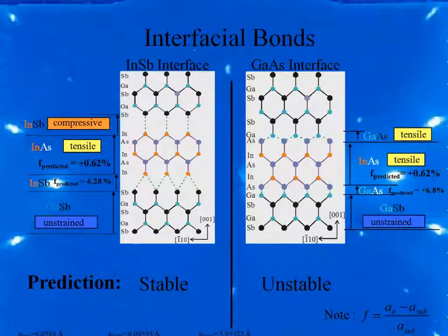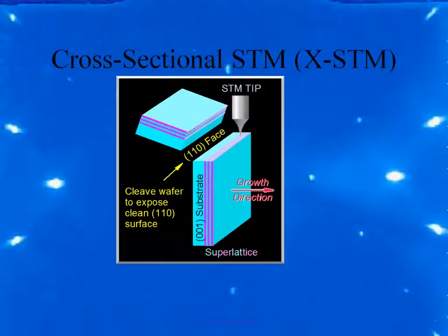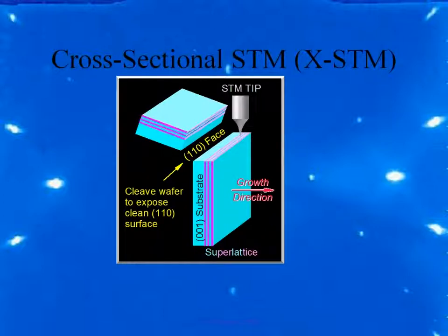However, when we grew these samples we saw just the opposite of what was predicted by theory. The samples grown with indium antimonide interfaces were actually unstable, and those grown with gallium arsenide interfaces were stable. This is where our study of structural effects in the different layers can give us some idea of why we're seeing the opposite of what theory predicts. The samples are studied structurally by cross-sectional STM, which gives us a qualitative view of what's happening. The STM tip is dragged across the sample under vacuum to get a picture of the composition modulation and structure.